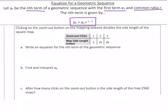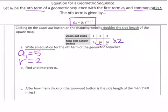So let's go ahead and use this equation and use it in this real-world experience. Clicking on the zoom out button on a mapping website doubles the side lengths of a square map. So they give us this chart, then they say write an equation for the nth term. So we're going to stop and only do that first. So when we're writing this equation, we need to know what the first term is, which is 5. It's the first term in the whole sequence. Then we have to find out what the common ratio is. So what is it doing each time? Well, the word problem actually told us, but if we're looking, we're multiplying by 2. Each time, 5 times 2 is 10, 10 times 2 is 20. So we're multiplying by 2 each time.